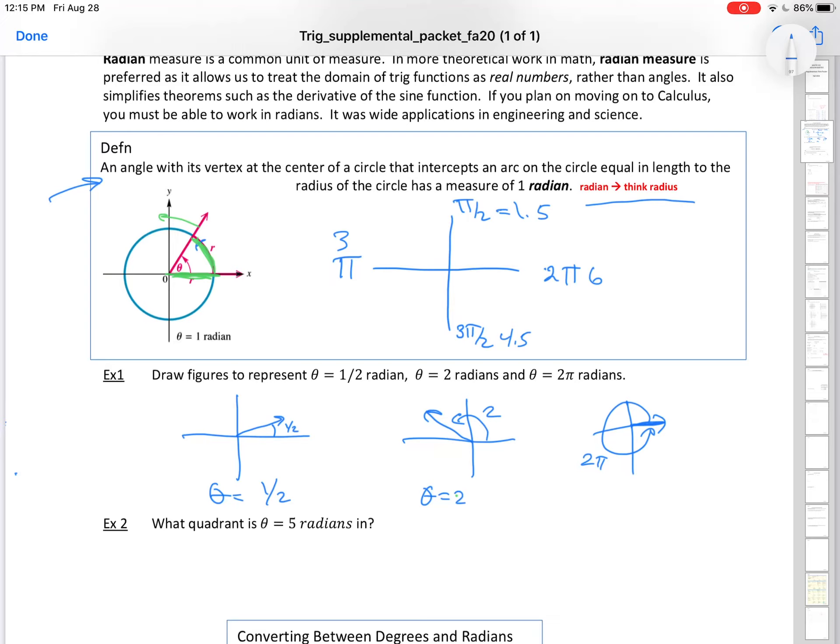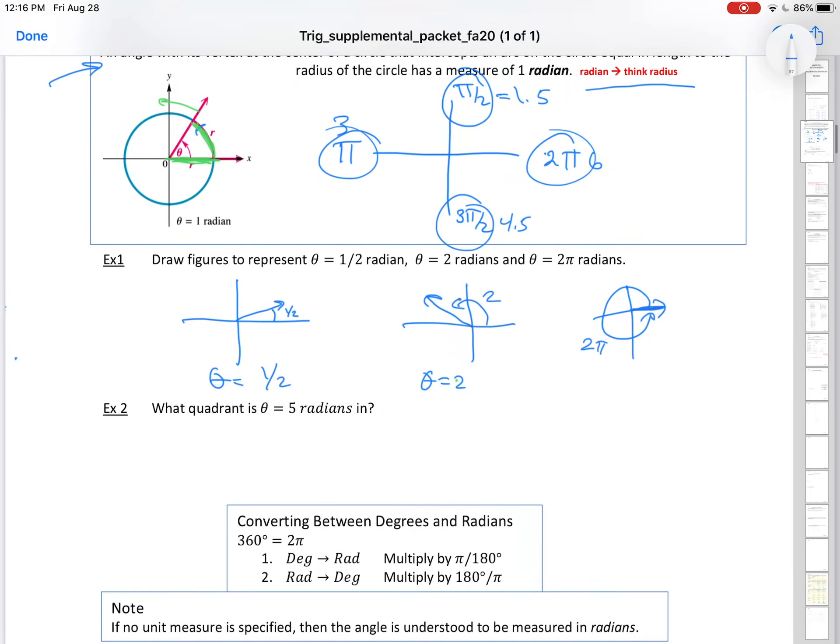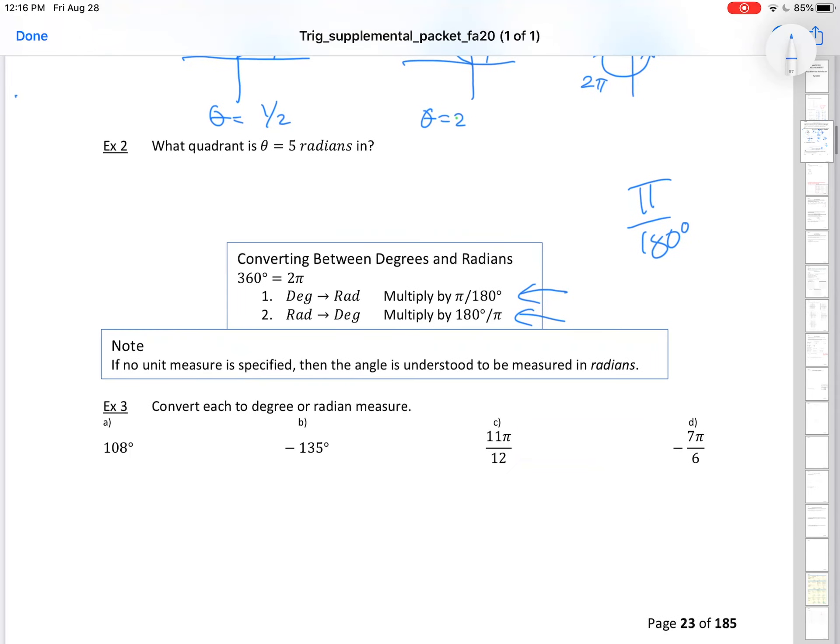It's better to remember that all the way around the circle is 2π, halfway is π, and 3π/2. Because there's a nice conversion, we know that π and 180 are linked to one another. If you want to convert from one to another, you just use some conversion factors. π is the same as 180, so essentially you're using a ratio.